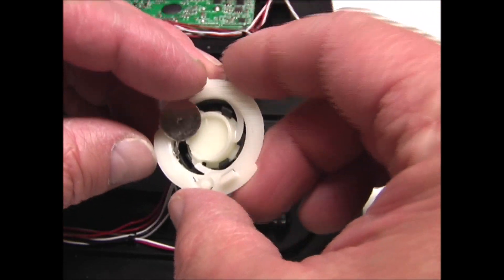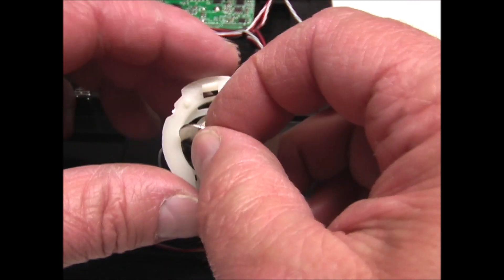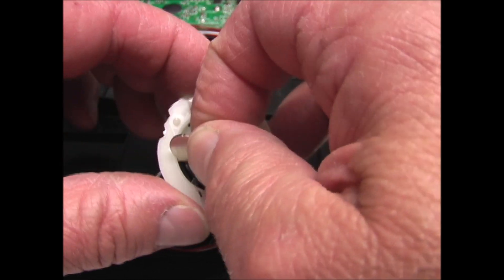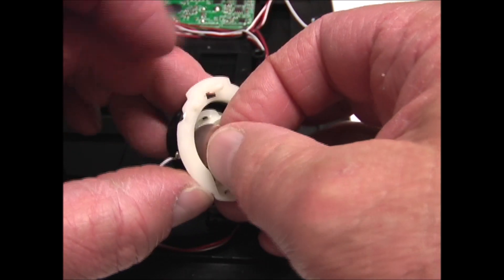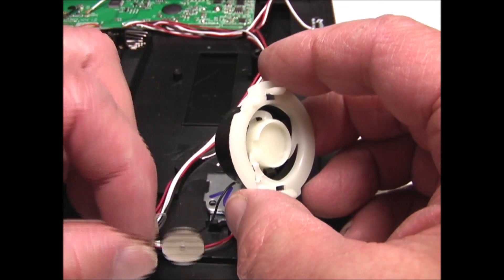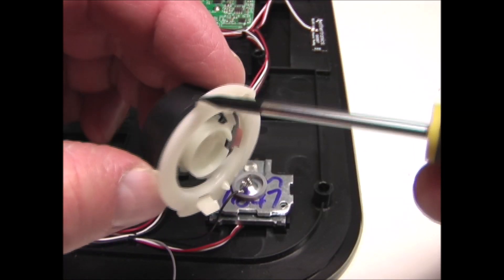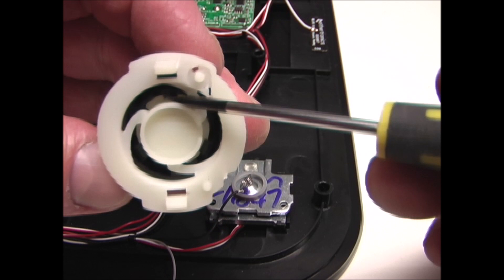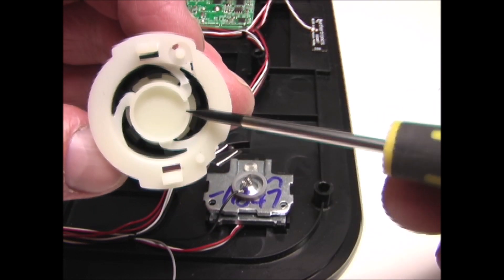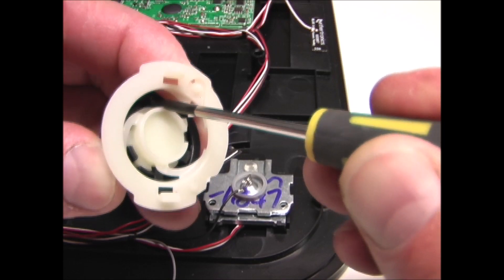And then this little metal disc here. I'm going to slip that out of there. And then I'm going to remove this foot. There's three little clips in here. Just pry those open and it will pop off.